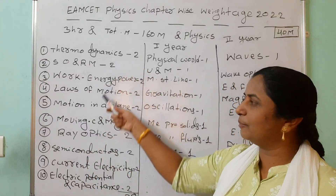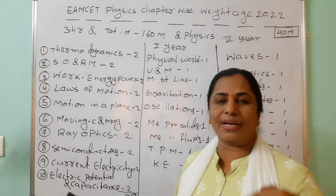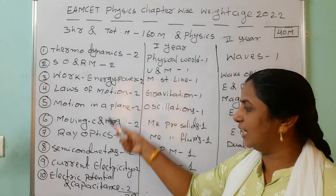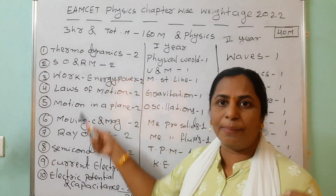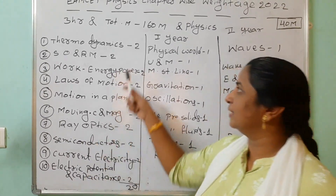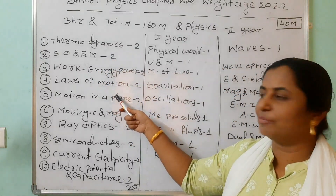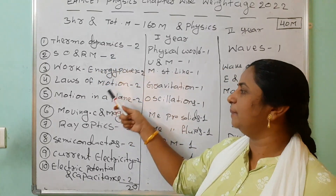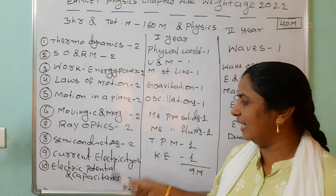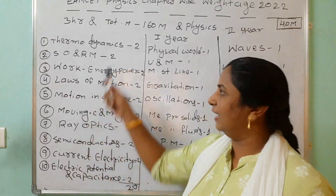These are the very very important chapters. If you want 20 marks in physics — you are getting 25 also — your rank is very good. So if you focus more on these 10 chapters, which are somewhat big chapters, you will get good marks for MSET exams. Thermodynamics, system of particles and rotational motion, work energy power, laws of motion, motion in a plane, moving charges and magnetism, ray optics, semiconductors, current electricity, electric potential and capacitors — chapters 6 to 10 are from second year and 1 to 5 are from first year physics.